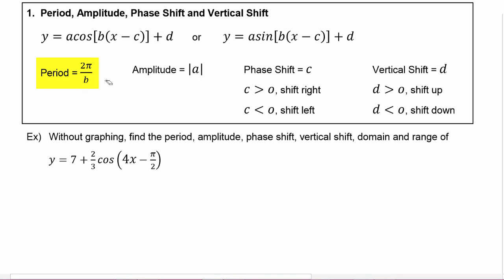So the period is found by taking 2π and dividing by the b coefficient. Amplitude is found by taking the absolute value of the a coefficient. Phase shift is equal to letter c. Now you have to notice a couple things. Letter c requires that the coefficient b has been factored out of the argument, and then what's left inside with the x will be letter c.